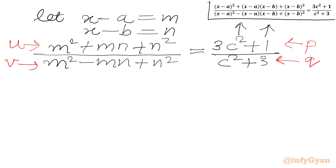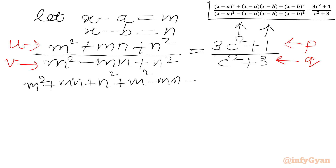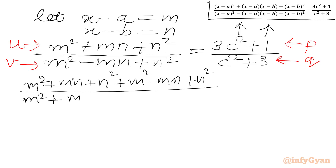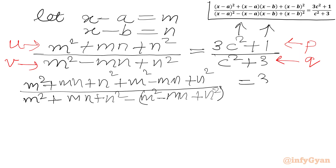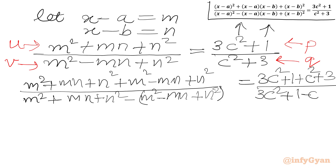We apply componendo-dividendo: u plus v gives m squared plus mn plus n squared plus m squared minus mn plus n squared. In the denominator, u minus v gives m squared plus mn plus n squared minus (m squared minus mn plus n squared). On the RHS, p plus q gives 3c squared plus 1 plus c squared plus 3 in the numerator, and p minus q gives 3c squared plus 1 minus c squared minus 3 in the denominator.